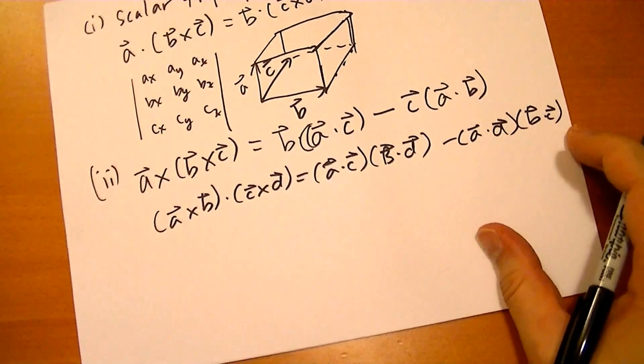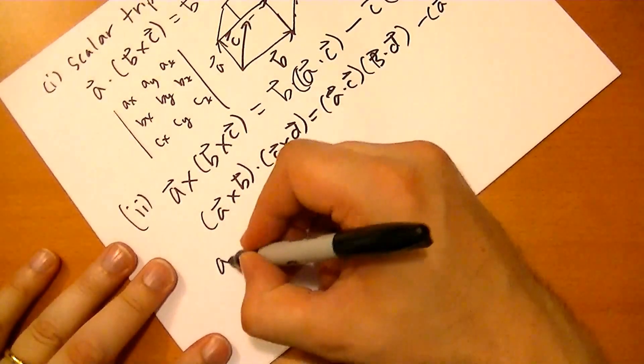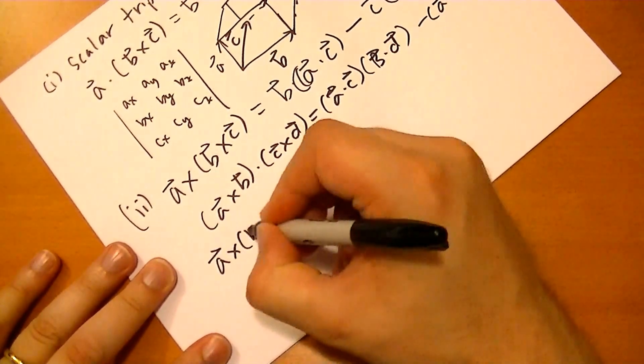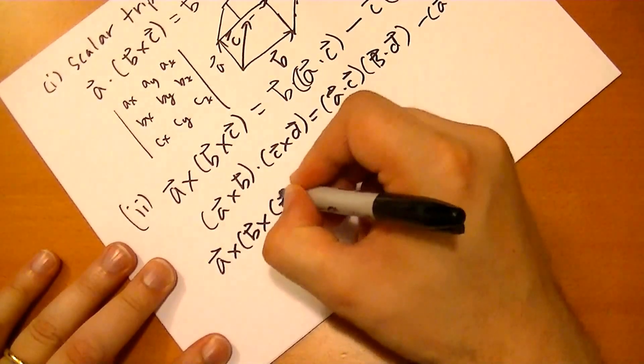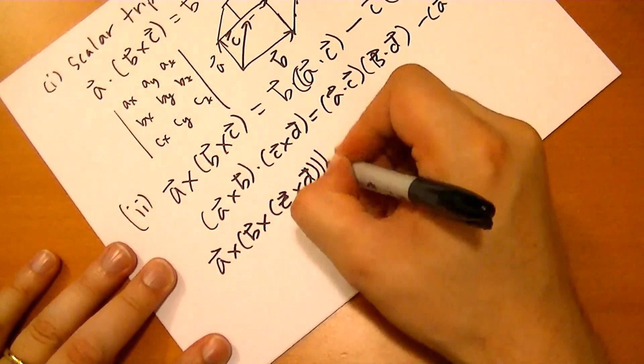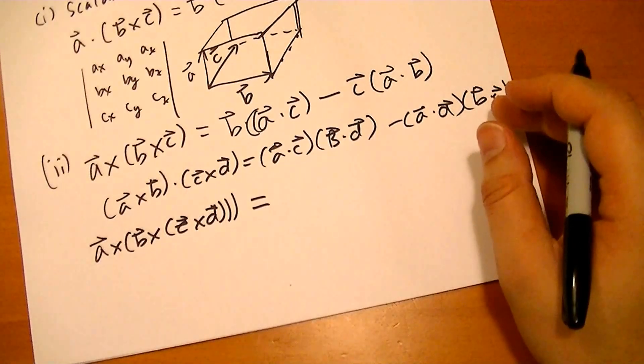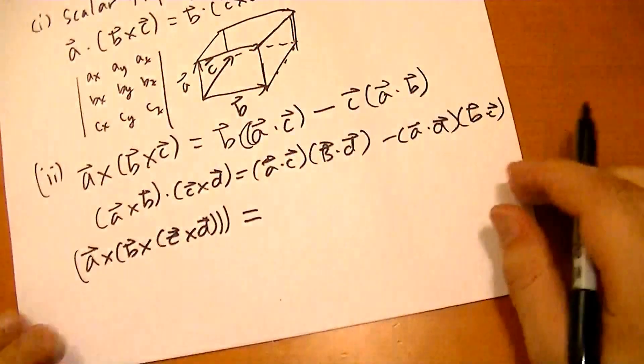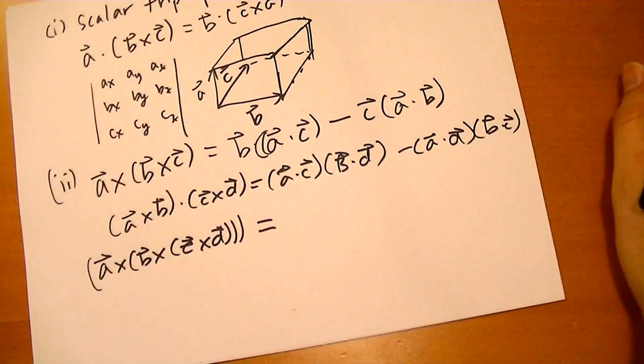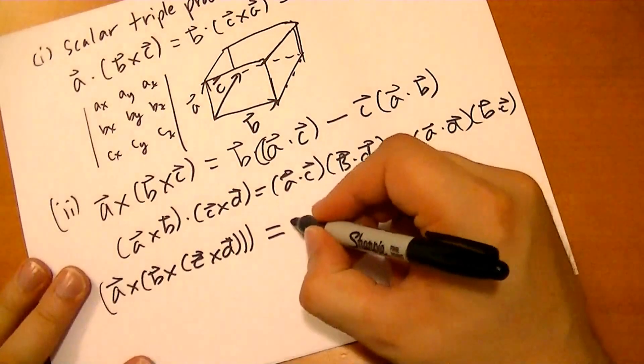And the other one, if you're crossing one after the other, so you have A cross (B cross (C cross D)). And what happens there? So it follows the BAC-CAB rule, except that the C vector is actually C cross D. So you go BAC.